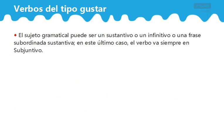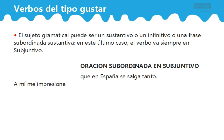El sujeto gramatical puede ser un sustantivo, o un infinitivo, o una frase subordinada sustantiva. En este último caso, el verbo va siempre en su subjuntivo. ¿Está claro? ¿Lo entendéis? 也就是说，这种始动句的主语经常可以是一个名词，或者是一个动词原型 un infinitivo，也可以是名词性的从句 una frase subordinada sustantiva。在最后这种情况，从句中的动词永远是用虚拟式。我们来看例子：a mí me impresiona que en España se salga tanto.